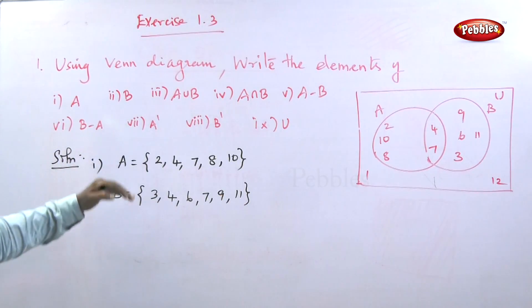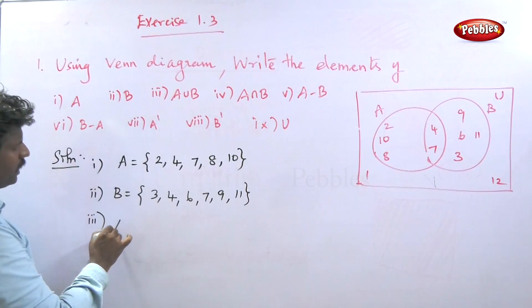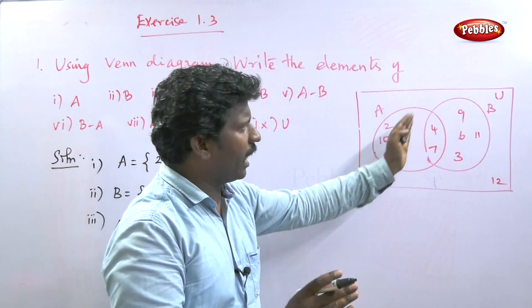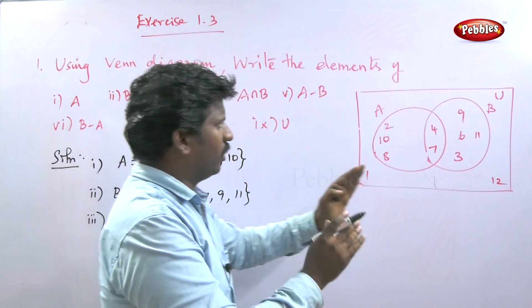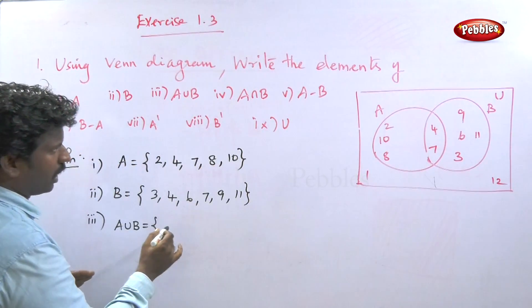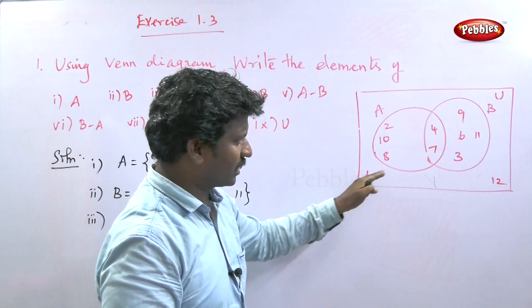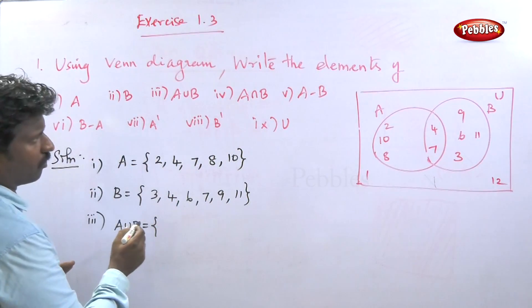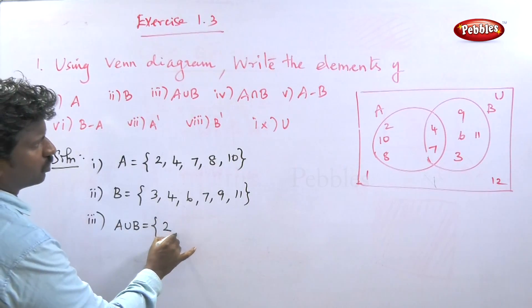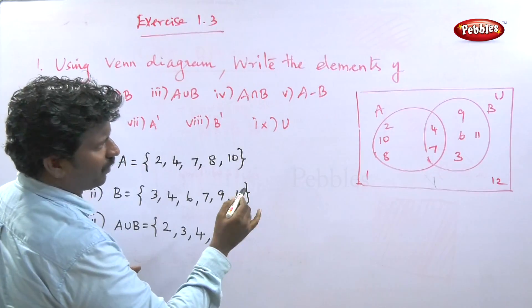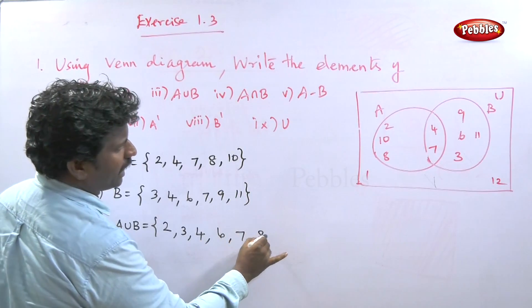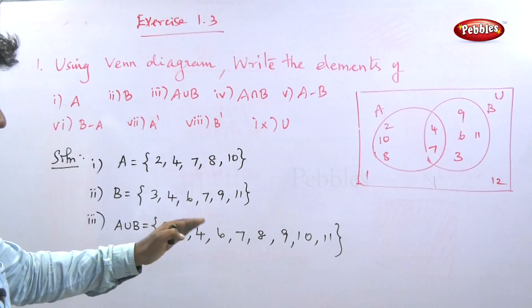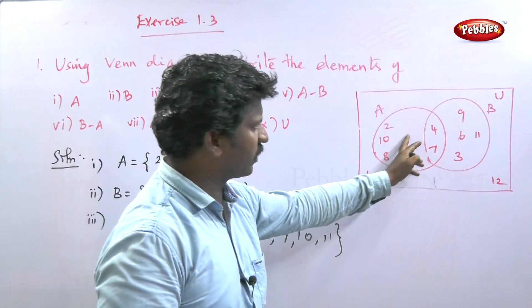The third question is A union B. When we join A and B together, all elements from both sets: 2, 3, 4, 6, 7, 8, 9, 10, 11. This is A union B.